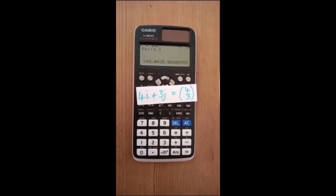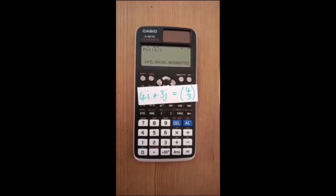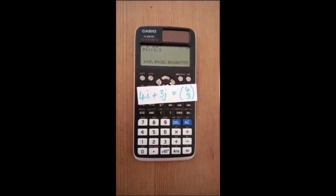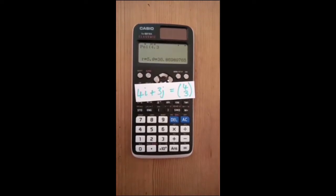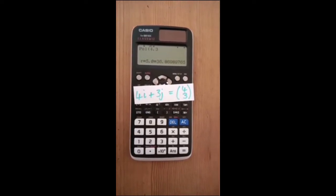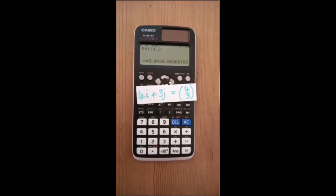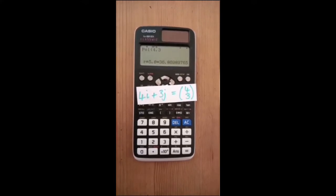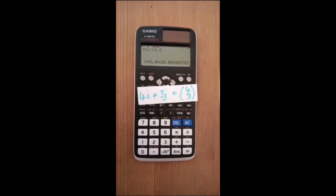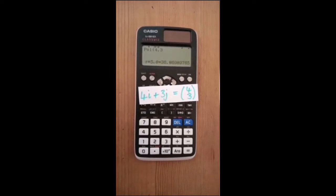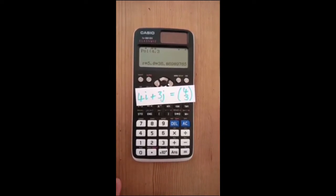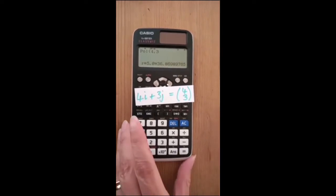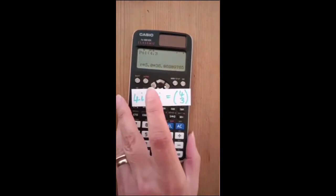Theta equals 36.9, which is the smallest angle between the x-axis and the vector. If this number is positive, it's anti-clockwise from the x-axis. If this number is negative, it's clockwise from the x-axis. Here is what this and other examples look like graphically.